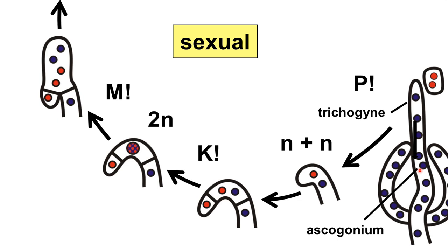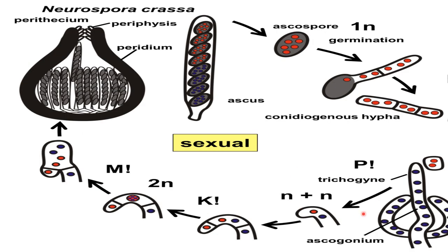During plasmogamy, the micro- or macroconidia act as spermatia and come to the trichogyne of the ascogonium; the wall between them dissolves and nuclei enter the ascogonium. Somatogamous copulation also occurs in some species. During development of ascogenous hyphae, two cells form a dikaryotic pair, and the terminal cell curves to form a hook-like structure called a crozier.